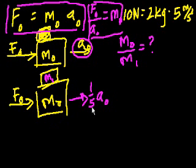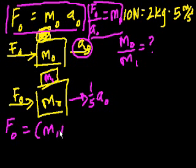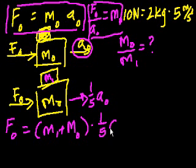And let's do that same relationship here with this. So here, this relationship tells us that f sub 0 is equal to m1 plus m0 times this new acceleration, which is 1 fifth a sub 0.